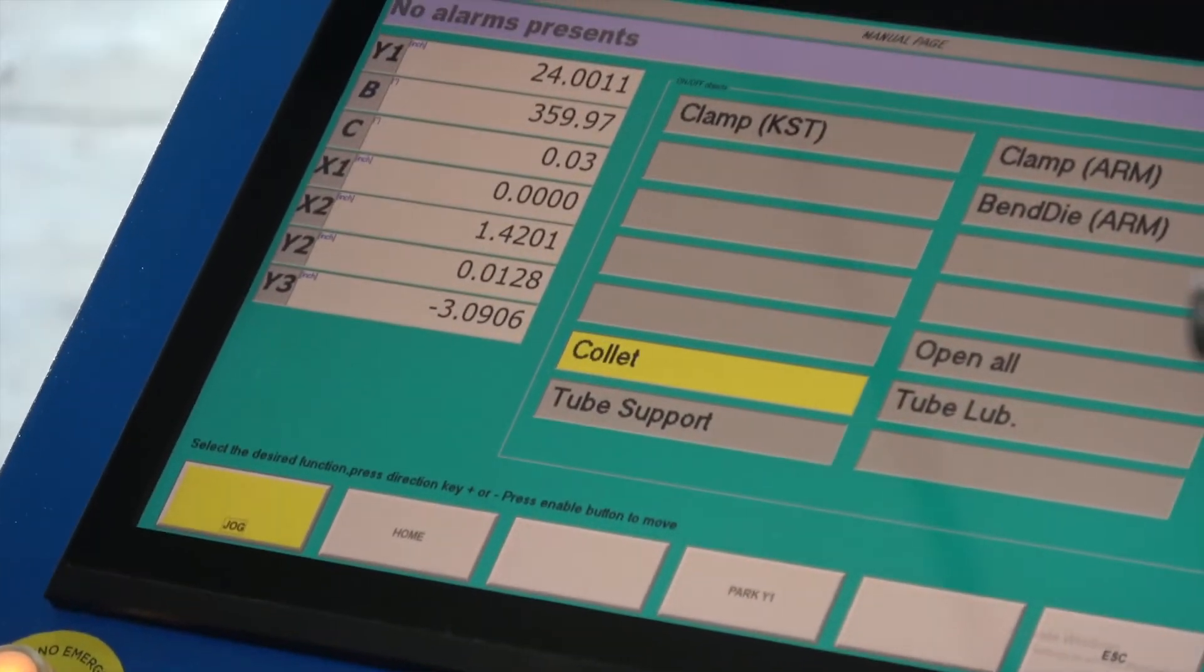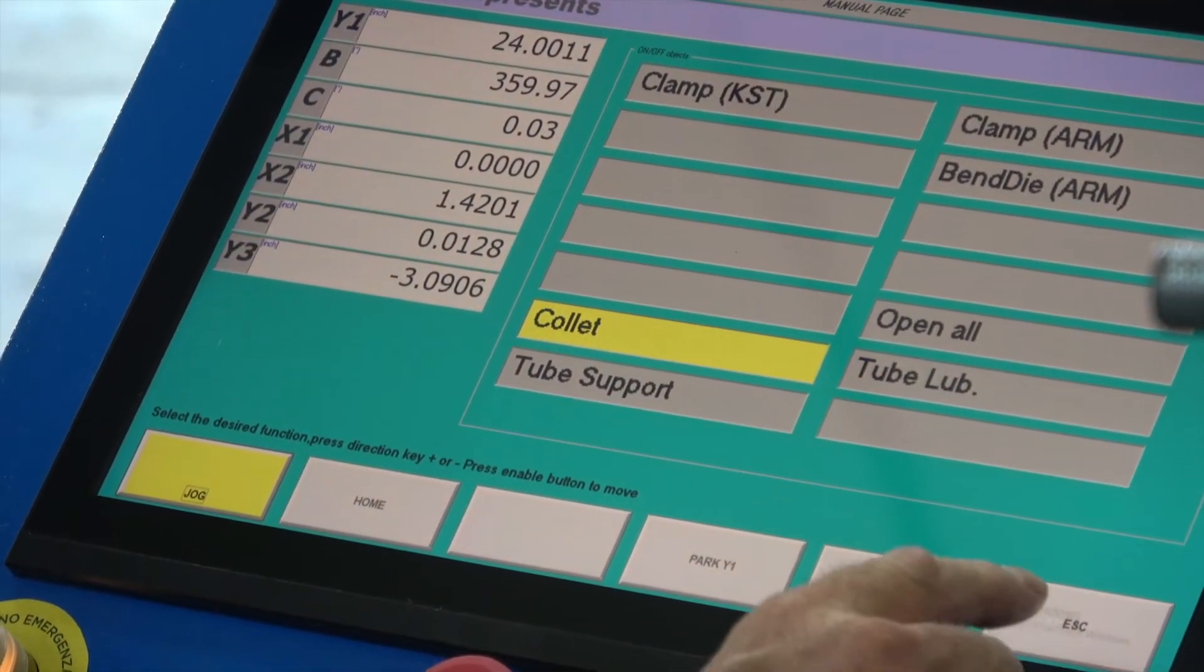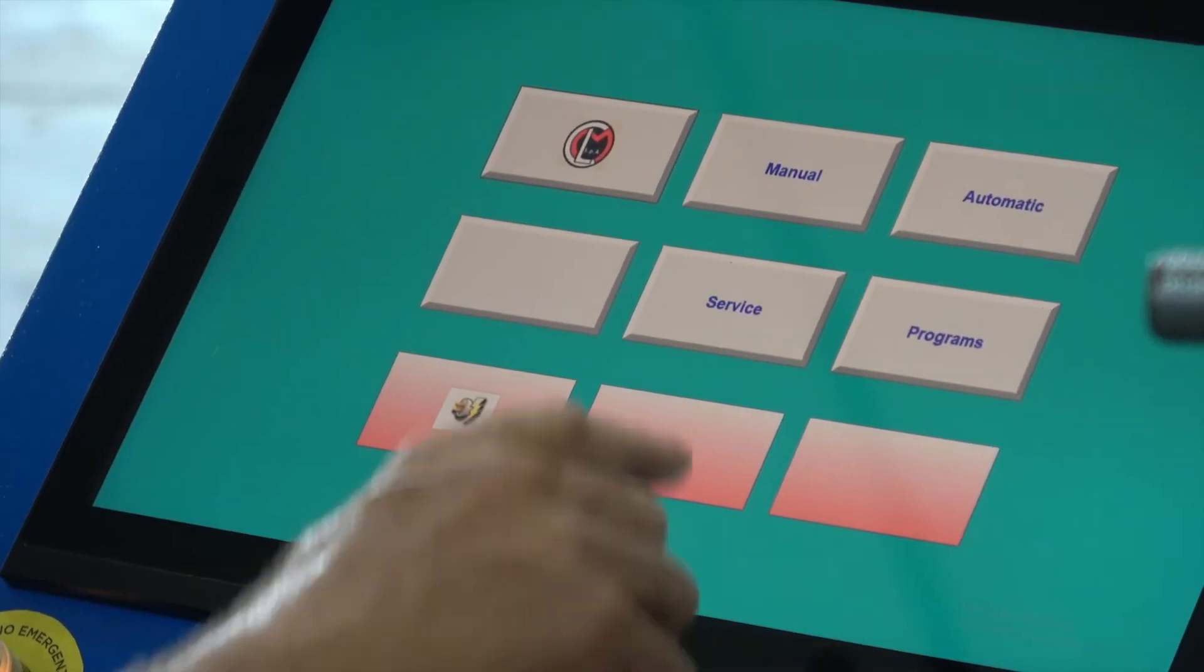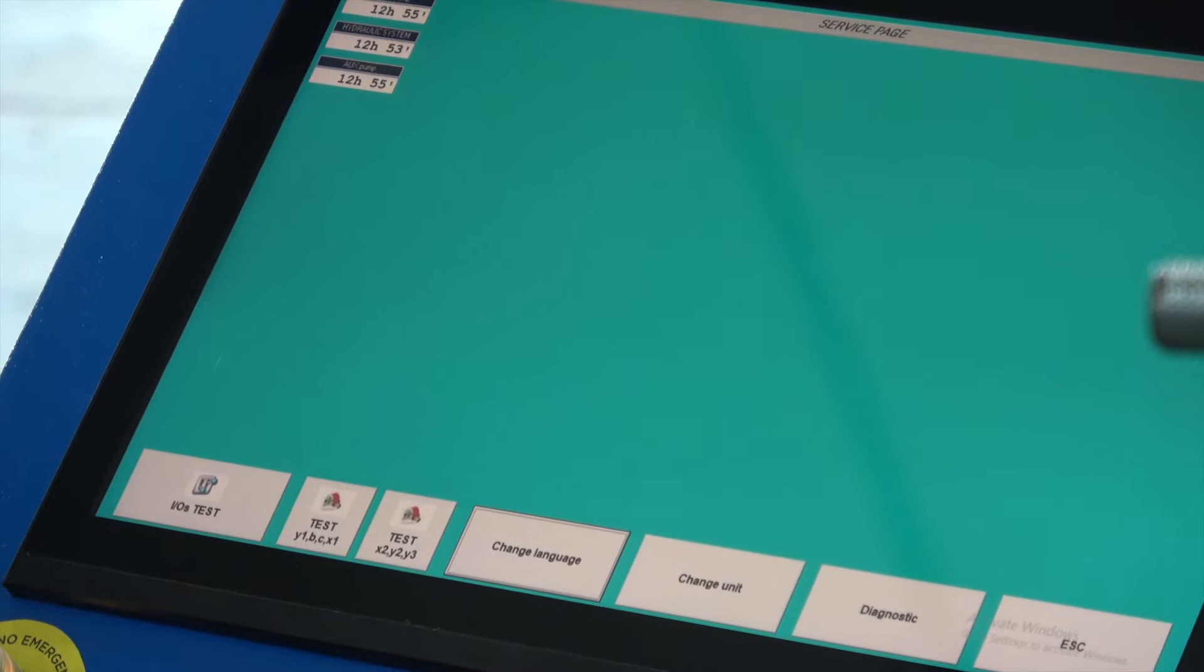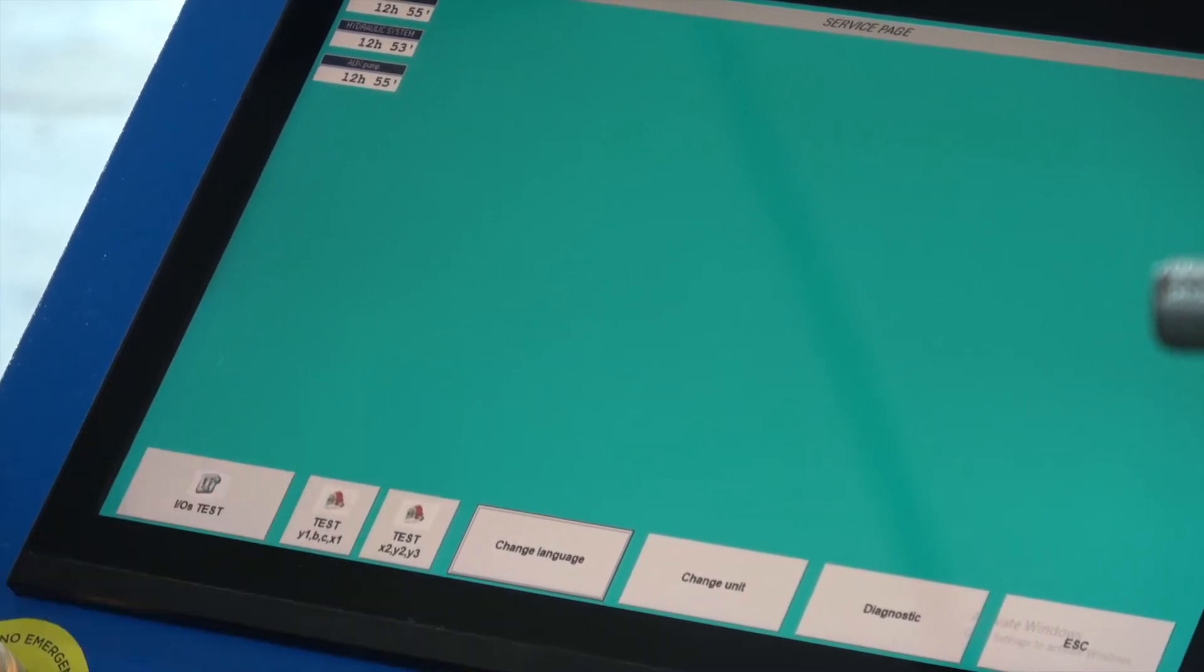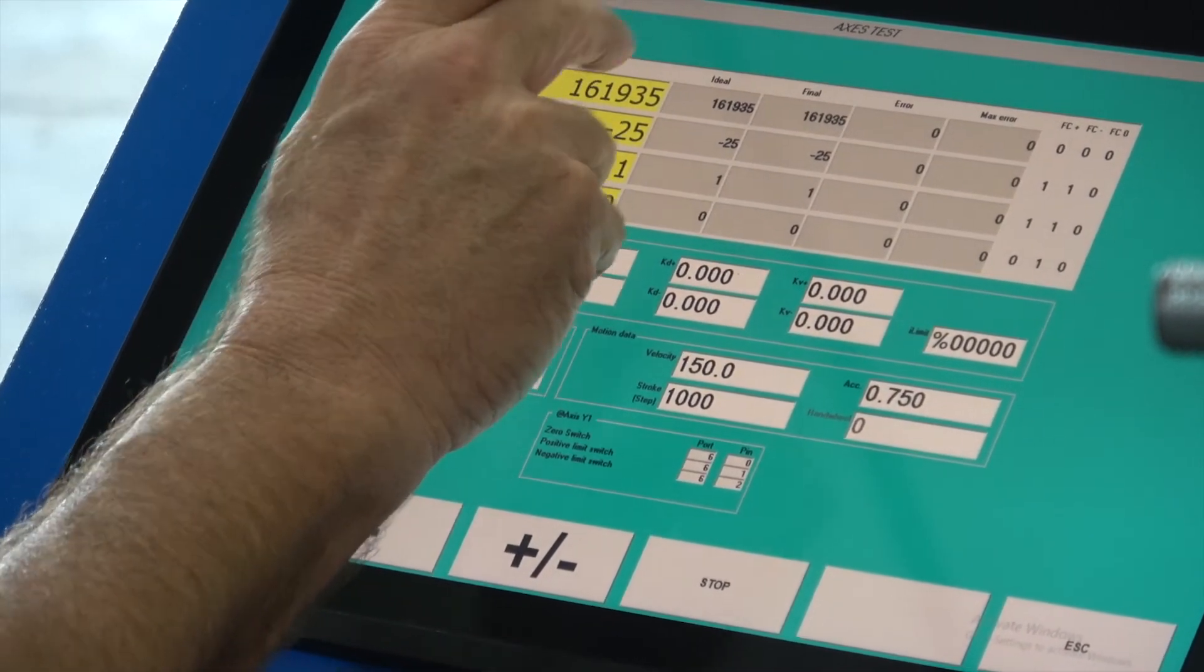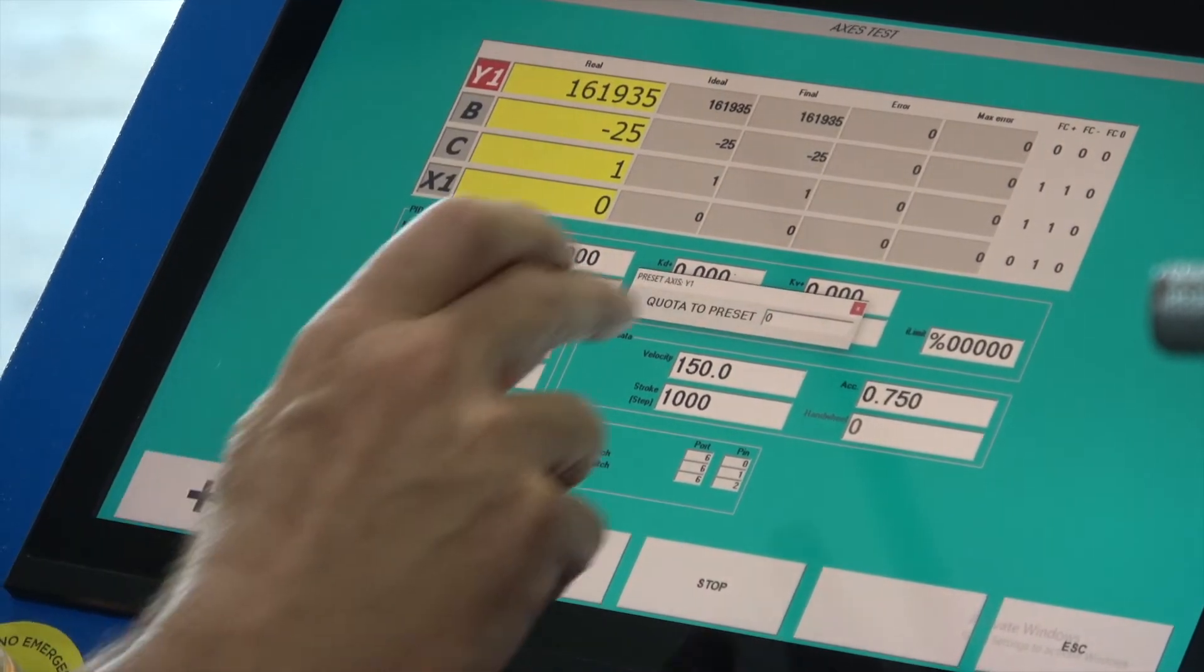To do that, come back to the control, escape, service, test Y1 BCX1, click that button. Y1 is the value you want to reference, that's the carriage.